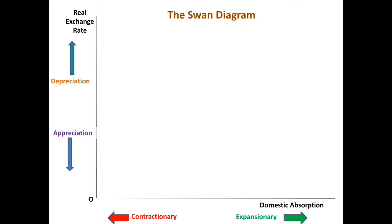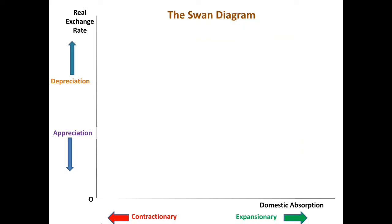Moving to the SWAN diagram: the horizontal axis shows domestic absorption, which represents consumption, investment, and government expenditure. A movement towards the right away from the origin implies an expansionary fiscal policy and/or an easy monetary policy. The vertical axis shows the exchange rate, and a depreciation is a movement away from the origin, while a movement towards the origin means an appreciation of the currency.